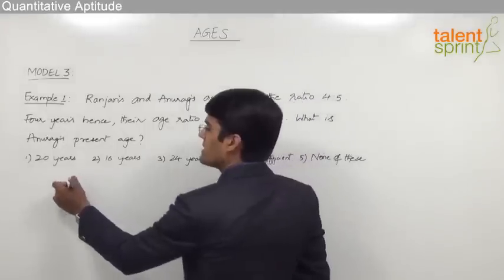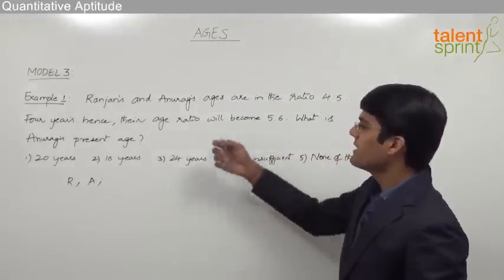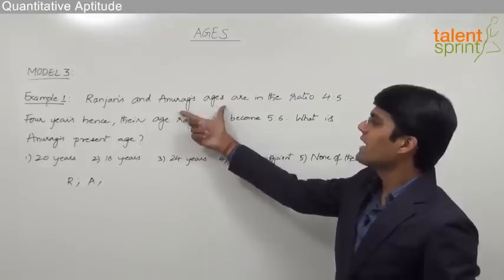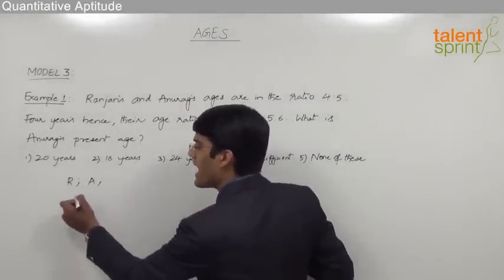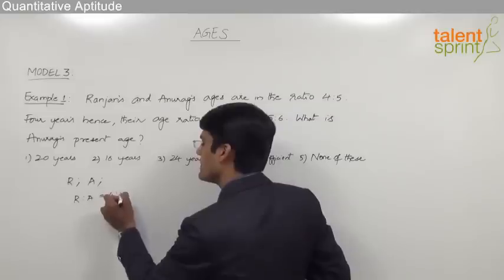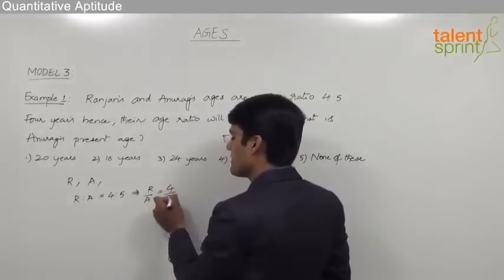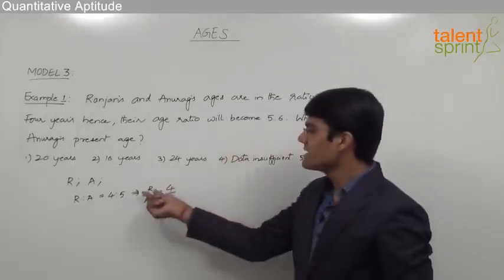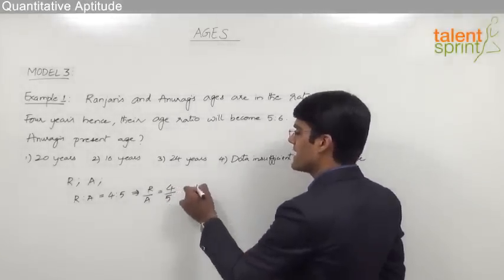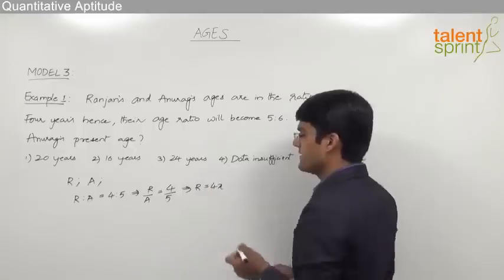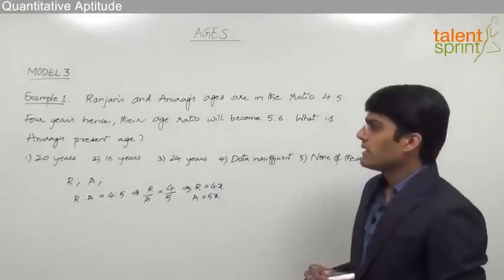Let us assume that Ranjan's present age is r and Anurag's present age is a. As given in statement one, Ranjan's and Anurag's ages are in the ratio 4 is to 5, so we can say that r is to a equals 4 is to 5, or r by a equals 4 by 5. That means Ranjan's age is 4 parts and Anurag's age will be 5 parts.